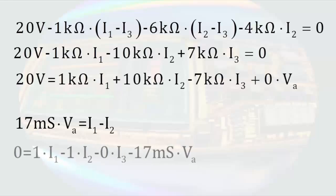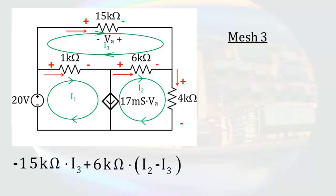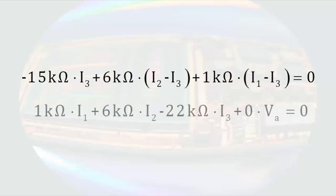So right now we have two equations with four unknowns. Going back to the circuit, we can do a loop around the top mesh. Starting in the lower left-hand corner and going clockwise, there is a voltage drop across the 15kΩ resistor equal to 15kΩ times I3. Continuing, the 6kΩ resistor goes from negative to positive — a voltage increase — with a term of 6kΩ times I2 minus I3. The voltage across the 1kΩ resistor is also an increase of 1kΩ times I1 minus I3. That completes the loop, so the total voltage must equal zero. Arranging this equation to make it matrix-ready, we now have three equations with four unknowns.